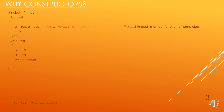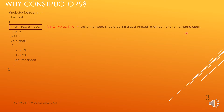Now let's understand why we require constructors. If I write a program where I try to initialize A and B as 100 and 200 directly, we cannot write like this in C++ — it is invalid. If you want to initialize data members, you have to do it through member functions of the same class, and the proper way is to use constructors.